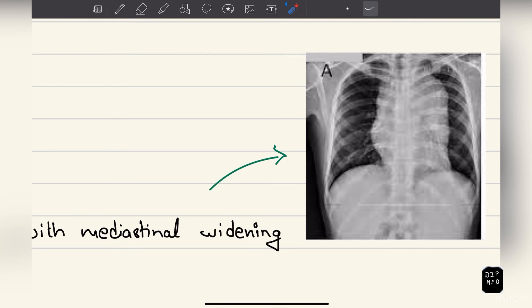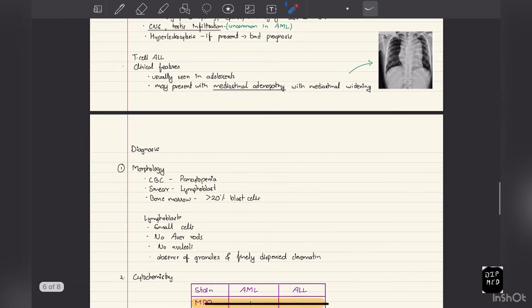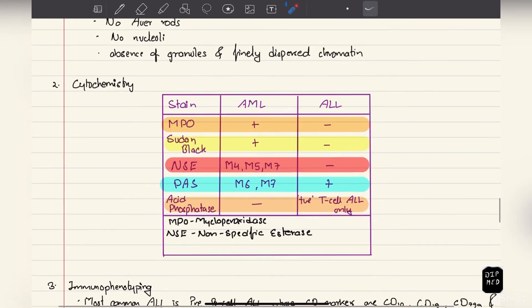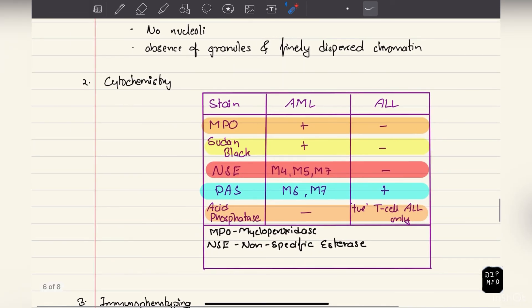Diagnosis: In morphology, pancytopenia on complete blood count. Smear shows lymphoblasts, and they will cover more than 20%. Lymphoblasts are small cells, unlike myeloblasts which are large. They contain no Auer rods, no nuclei, and there is absence of granules with finely dispersed chromatin.